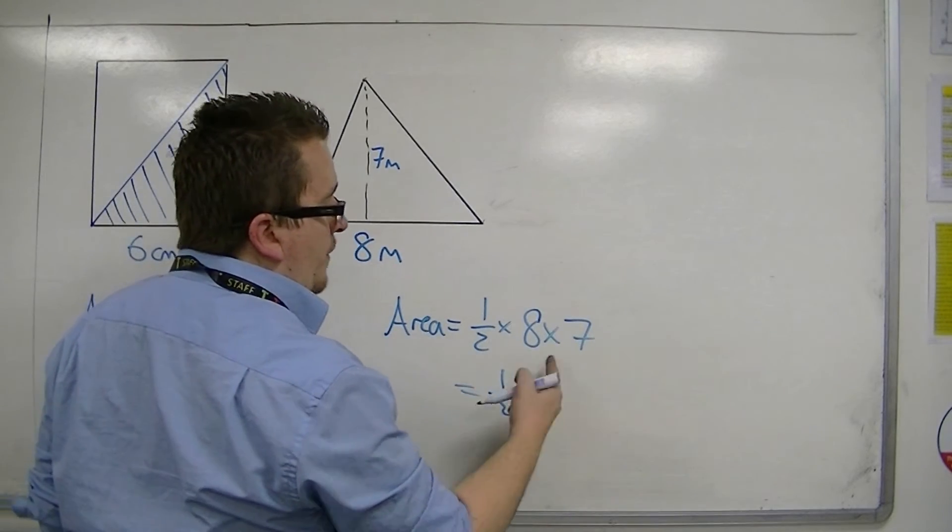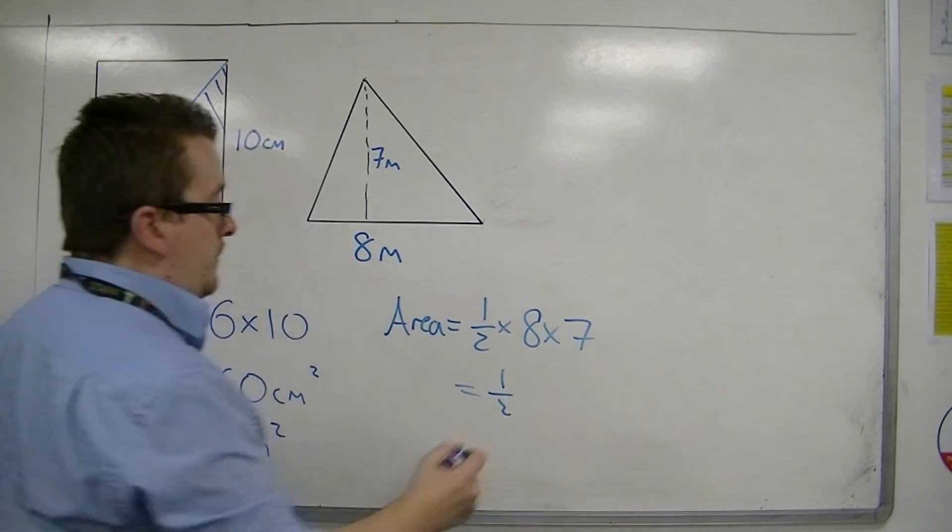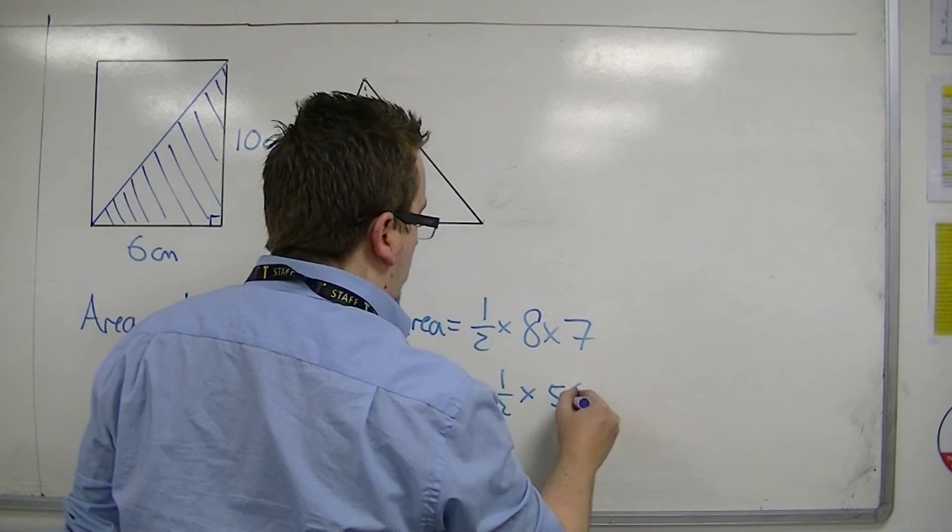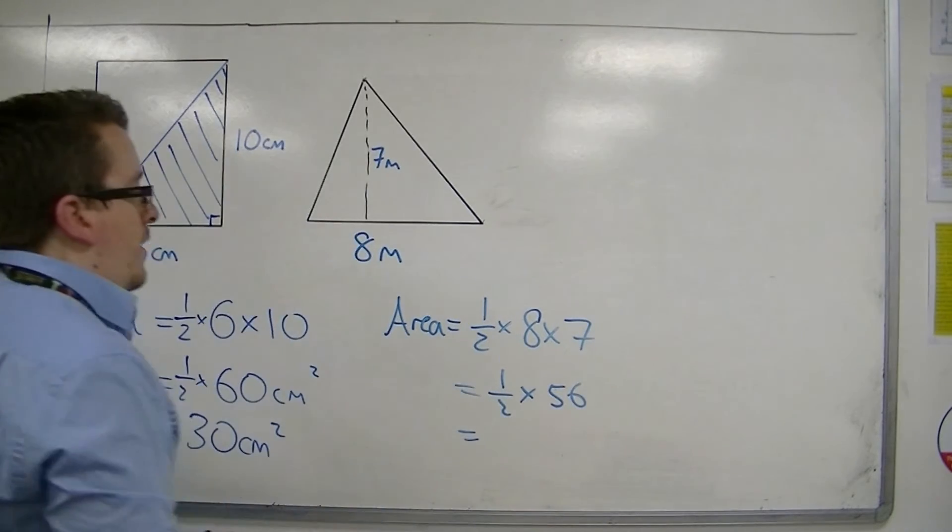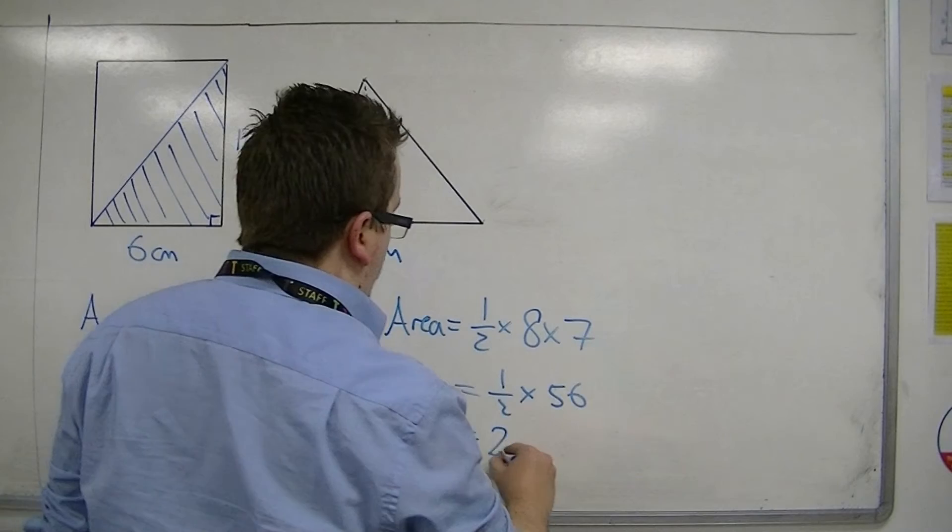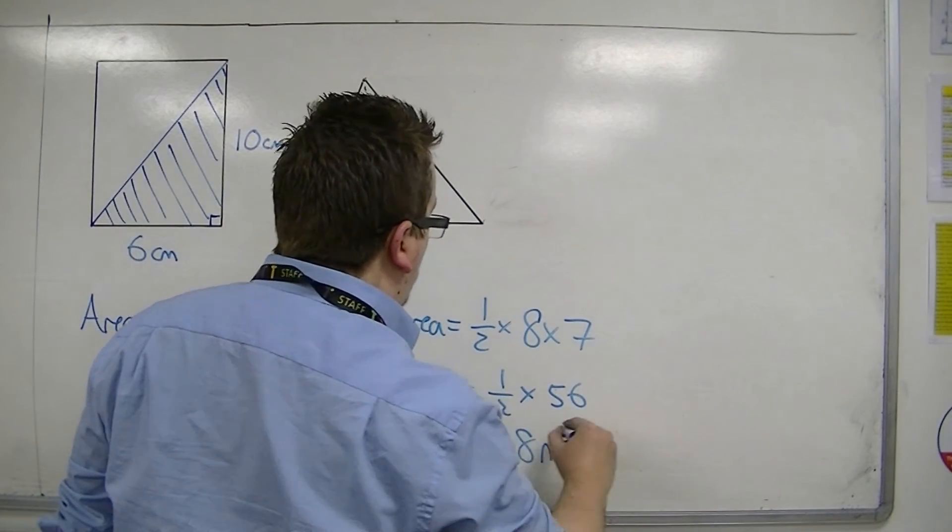Half of base times height. So half of 8 times 7 is 56. Half of 56 is 28. So it would be 28 metres squared.